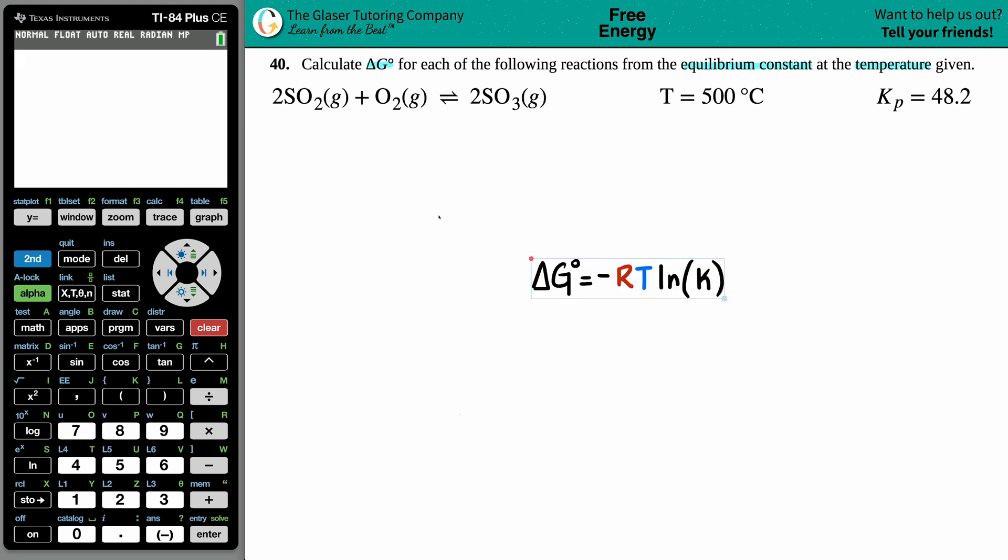ΔG equals -RT ln(K). The K value is the equilibrium constant. I just wrote K here because it could be any equilibrium constant - Ka, Kb, Kc, Keq, Ksp, or Kp. This number is 48.2. Now I just need to know what the R value and the T value is.